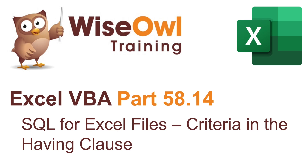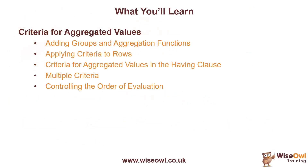Welcome to this WiseOwl Excel VBA tutorial. In this part of our series on writing SQL for Excel files, we're going to look at how to apply criteria in the HAVING clause of a query. We'll start with a quick reminder of how to add groups and aggregation functions to a SELECT statement and how to apply criteria to rows using the WHERE clause. Then we'll look at how you can use the HAVING clause to apply criteria to the results of aggregation functions. We'll also look at how you can include multiple criteria in the HAVING clause and how you can control the order of evaluation of all the criteria.